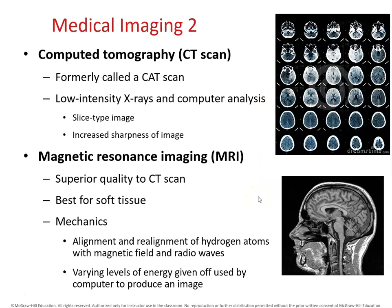MRIs are also very common. MRIs are really good for looking at soft tissue instead of bone. In an MRI, a person is exposed to a very strong magnet, which interacts with the hydrogen atoms in the body and realigns them. As the hydrogen atoms slightly change their position, they give off energy, and different tissues with different concentrations of hydrogen atoms give off energy at different levels — and that can be seen in imaging.